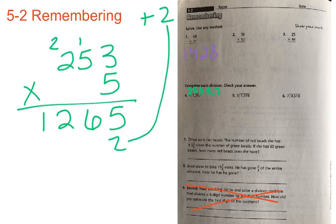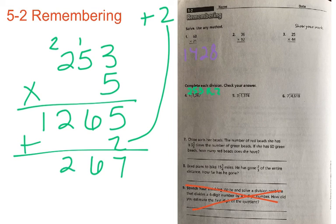And then I'm going to add in my remainder here. 5 plus 2 is equal to 7. 6 plus nothing is 6. 2 plus nothing is 2. And 1 plus nothing is 1. And 1,267 is the correct answer. And that was our dividend, our original dividend, 1,267. That's how you complete your check.